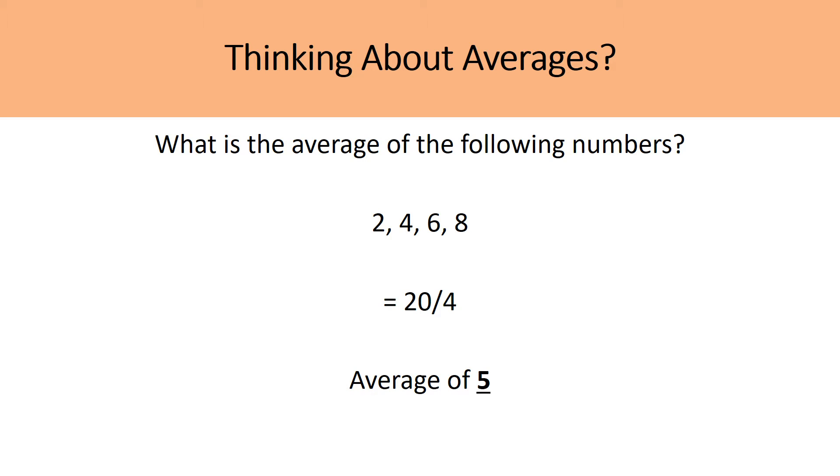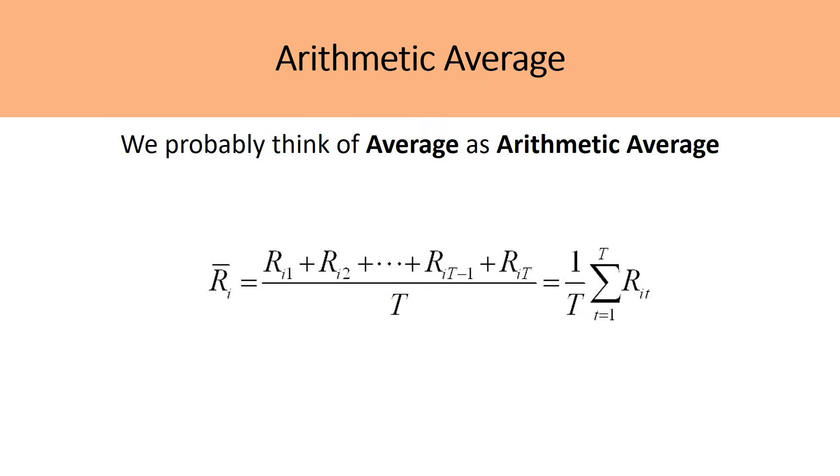The process and usually what most of us think of when we think of averages is the arithmetic average, which is summing up those returns or the data values in each period, then dividing by the number of data values to get your average data value. And so when looking at the return of a stock, the arithmetic average return would simply be the return in year one, two, all the way till the number of years that you're considering, dividing by the number of periods to get your average return value.